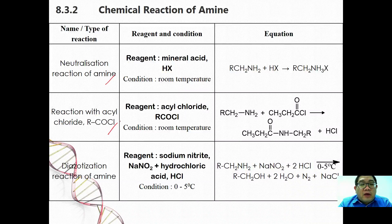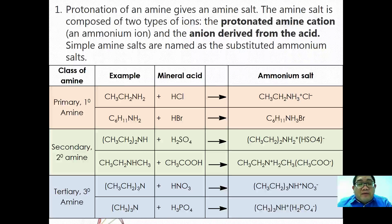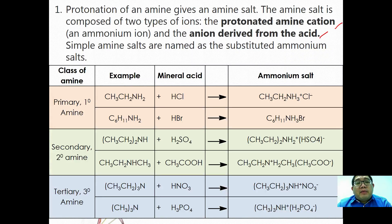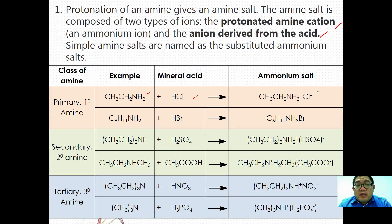We are going to have a look at the neutralization reactions of amine, the reaction with acyl chloride to form a different class of amide, and also the diazotization reactions of amine to form alcohol. For neutralization: protonation of an amine gives an amine salt. The amine salt is composed of two types of ion — the protonated amine cation and also the anion derived from the acid. Simple amine salts are named as a substituent of ammonium salt.